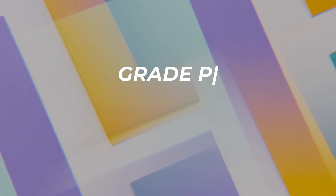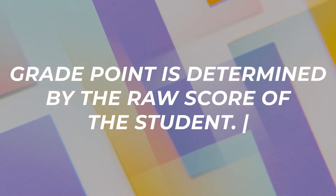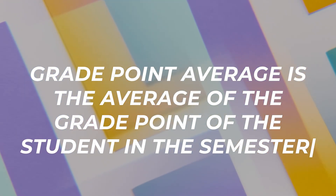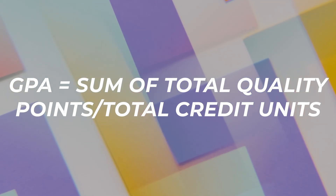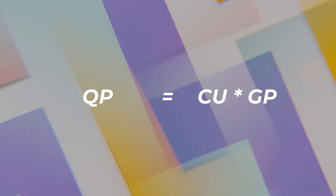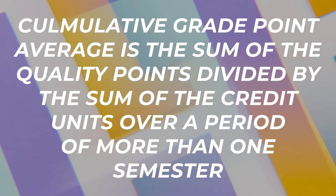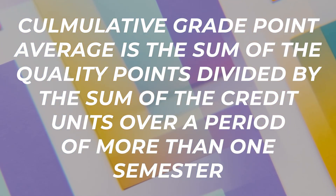The grade point is determined by the raw score of the student, as earlier described. Then we have the grade point average, which is the average of the grade point of the student in a semester. It is the sum of the quality points over the total credit units. The quality point is calculated as credit units times the grade point. The cumulative grade point average is the sum of the quality points over the sum of the credit units, over a period of more than one semester.